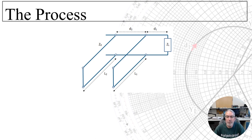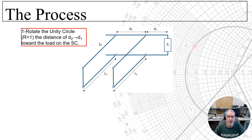Let's move on to a review of the overall process, then work our examples. Our first step is to draw the auxiliary unity circle and rotate it the distance d1 to d2. Recall that the center of the matching circle is on 3j0. Use your compass to rotate that point toward the generator by the distance d2. Using that point as your new center, draw a circle for the same radius as the matching circle on that point.